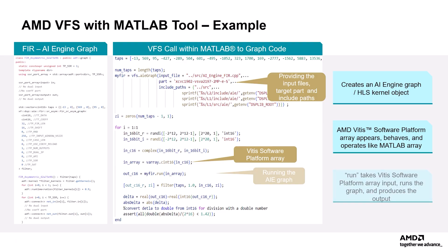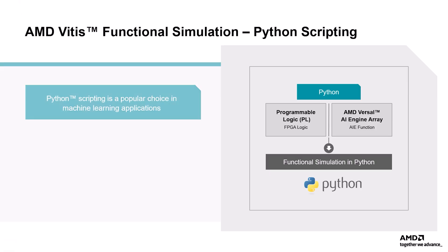The run method of the graph or kernel object takes the input Vitis array and converts it into a compatible vector type before passing it to the kernel for an output. With Vitis functional simulation, users can leverage their existing designs from the Simulink framework to MATLAB and verify functionality using the MATLAB framework.